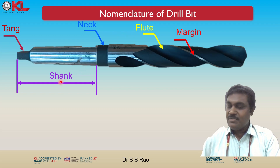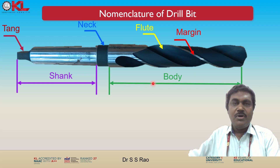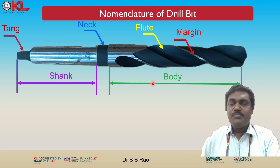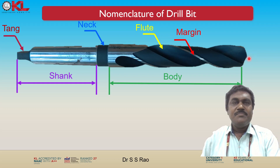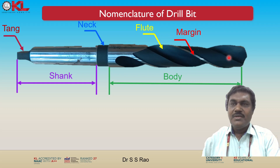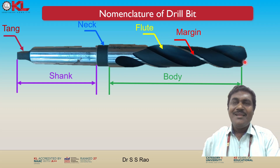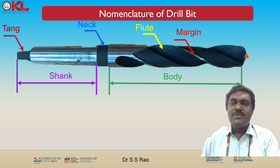Next is the body. The body is the main cutting portion of the drill bit. It extends from the neck to the tip and contains the flutes and cutting edges at the end of each flute. These sharp edges slice into the workpiece, creating the hole as the drill rotates. These sharp edges actually remove the material.